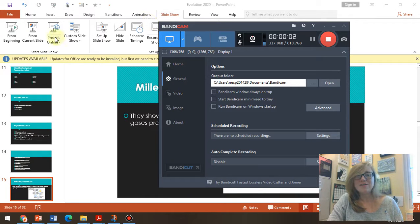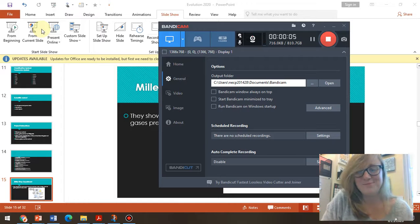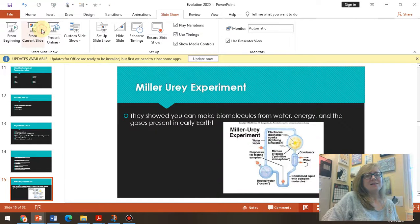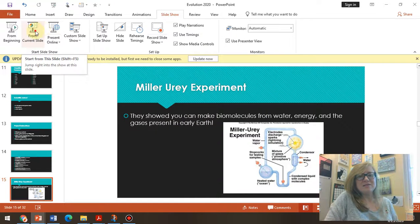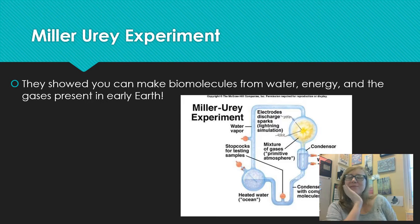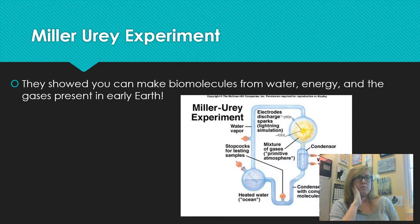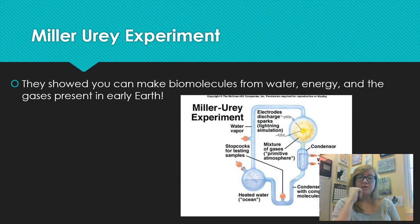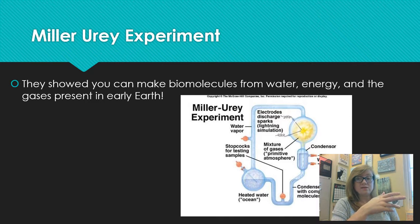We're back with more excitement - science, evolution, gray! So let's talk about a couple things: what was the early Earth like and how do we know, what kind of creatures existed on Earth, and what kind of order did living things evolve in? Let's find that out.